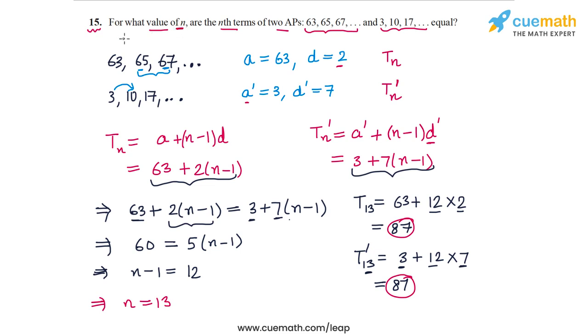So the answer is that for n equal to 13, the nth terms are equal in the two APs. And that solves question 15.